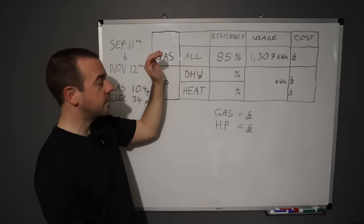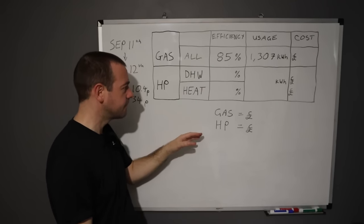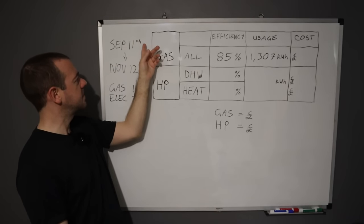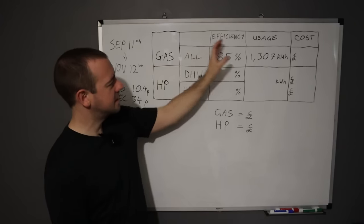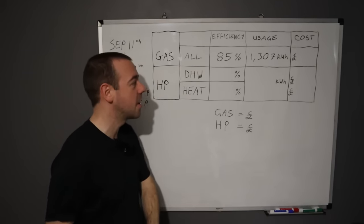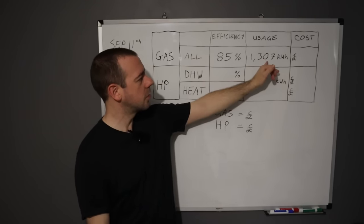This table is going to compare a heat pump versus our gas boiler that we used to have installed. The heat pump data will be the actual data from September 11th to November 12th of this year. The gas data is coming from the exact same time period but for 2021.